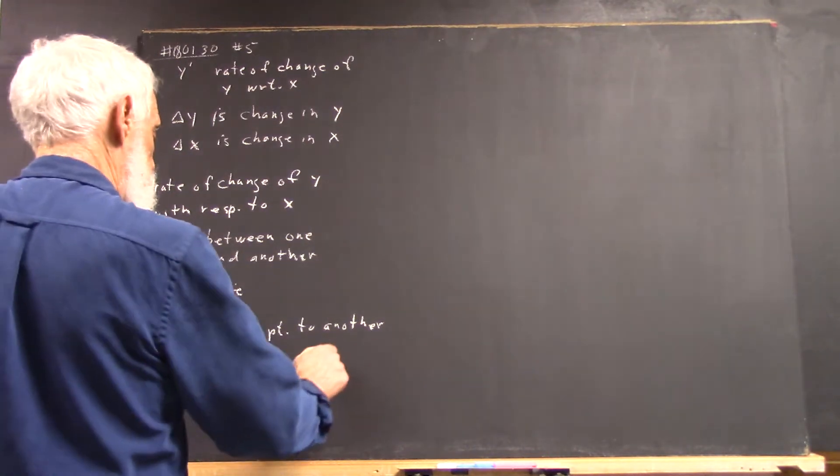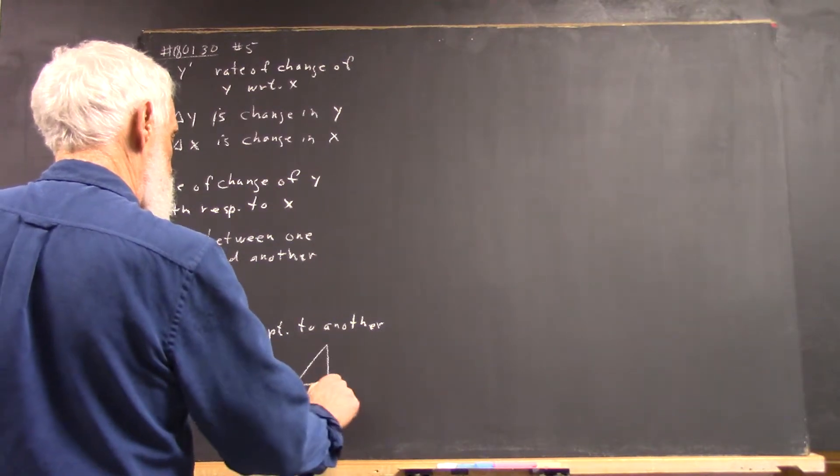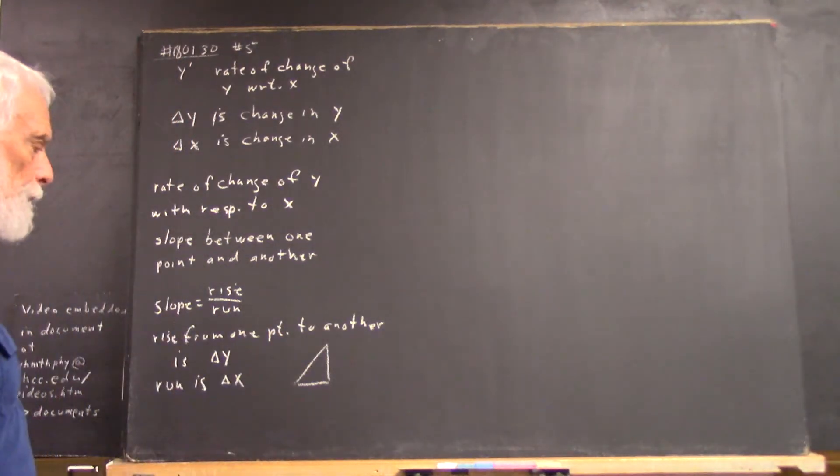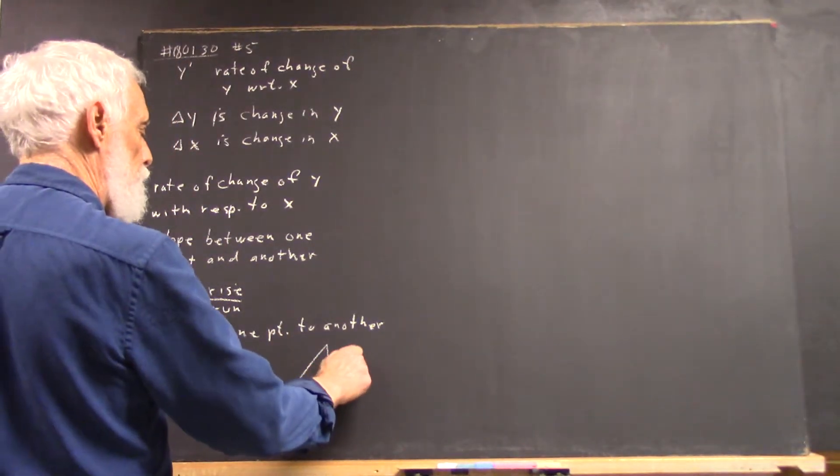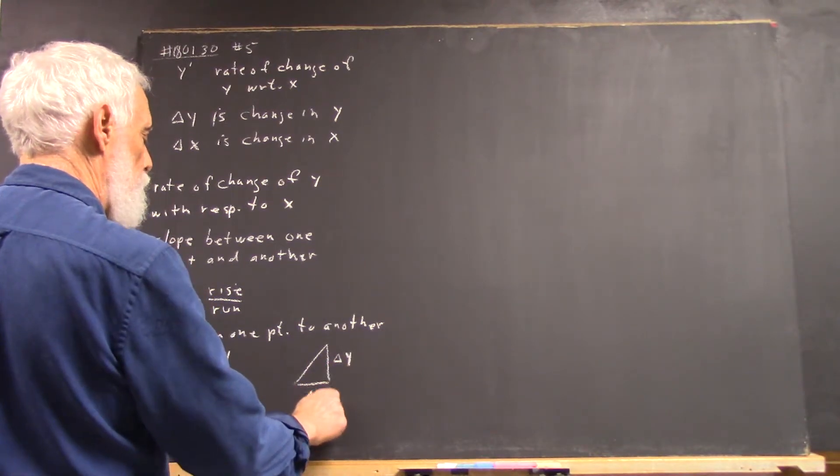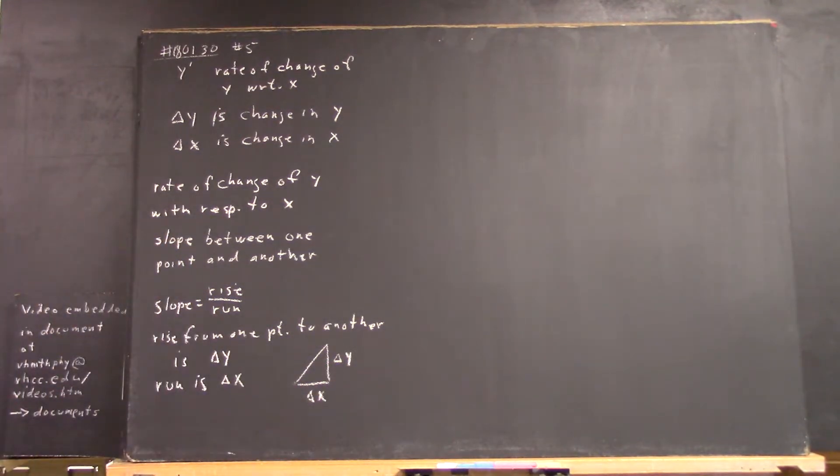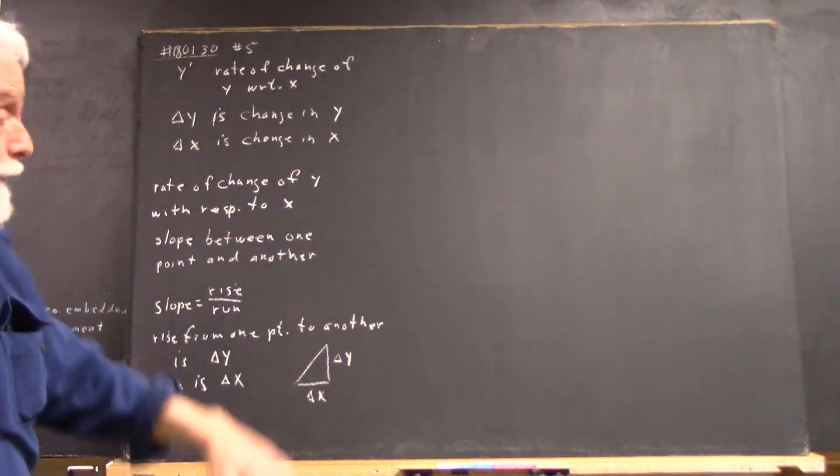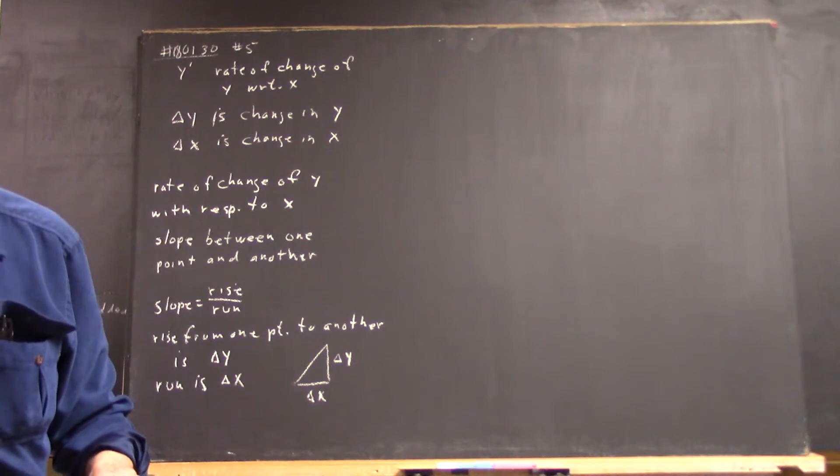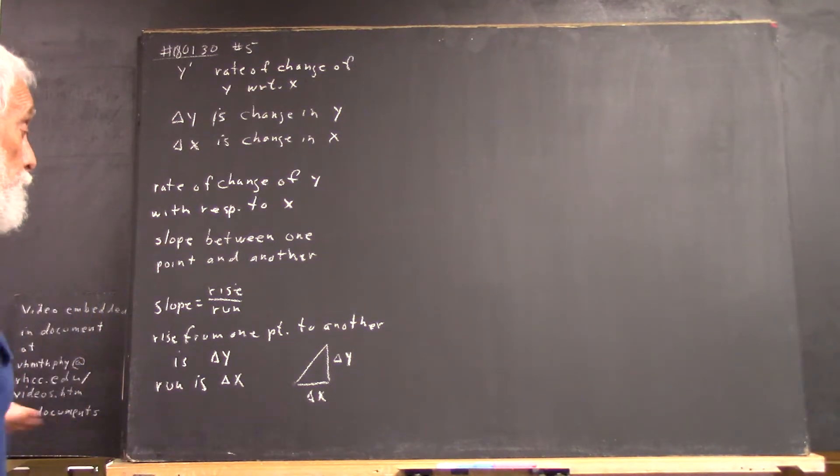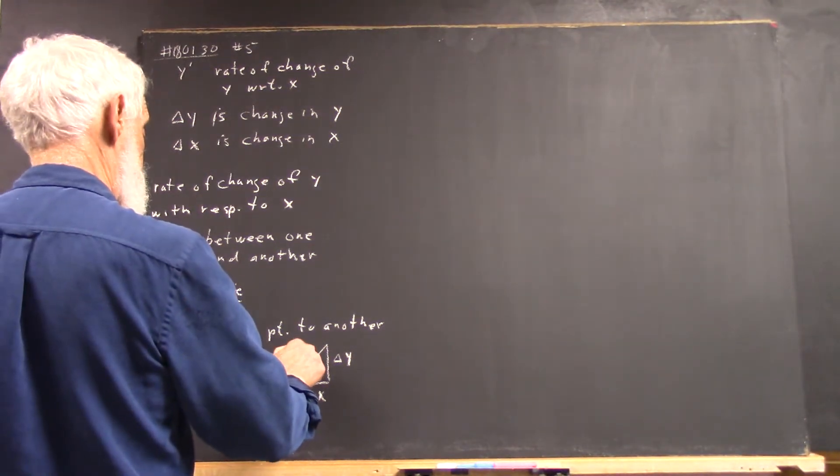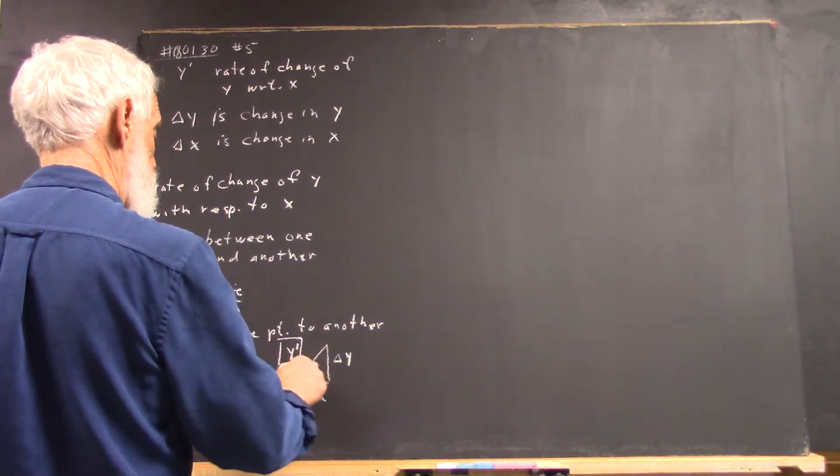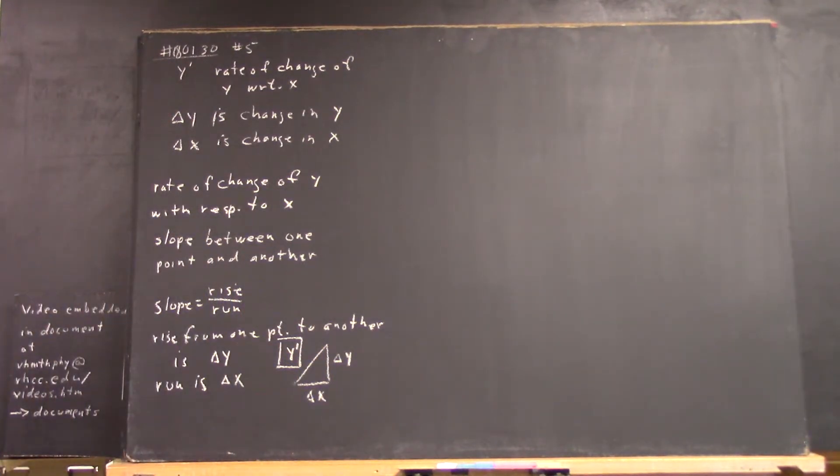And the run is delta x, right? So your fundamental triangle is going to look like this. You don't know what the coordinates are but you know that this is going to be delta y and this is going to be delta x, right? And the slope is identified with the rate of change of y with respect to x because that's the way we defined it. So the slope is y prime, right?